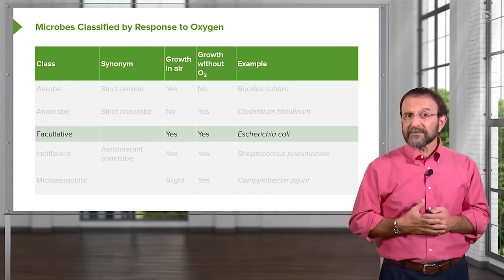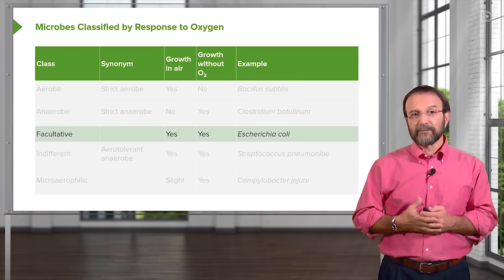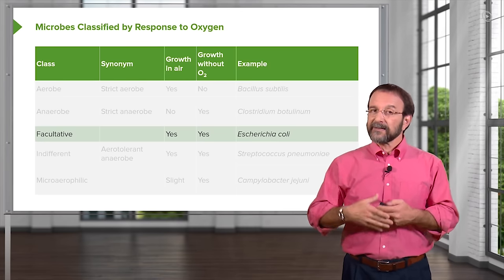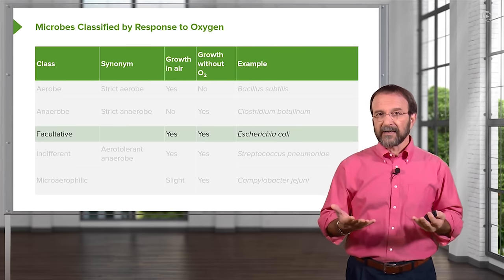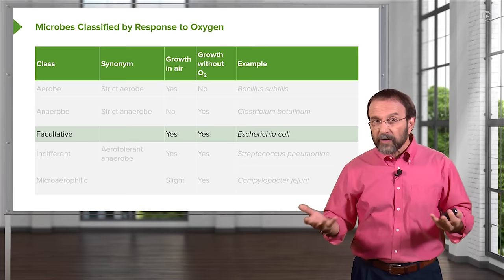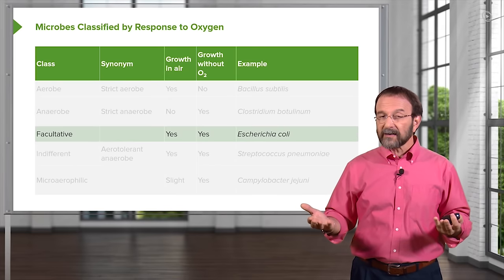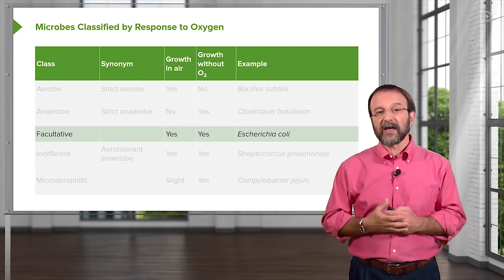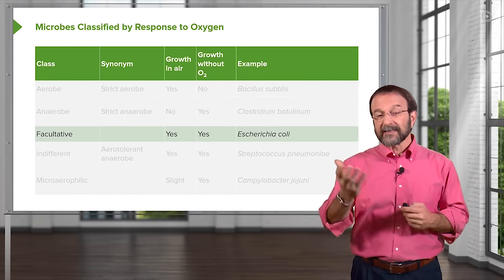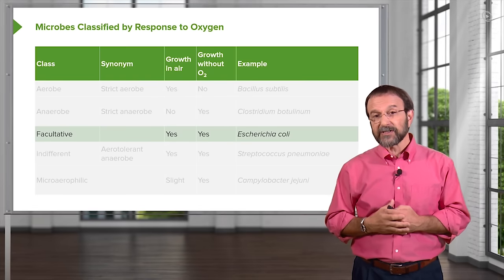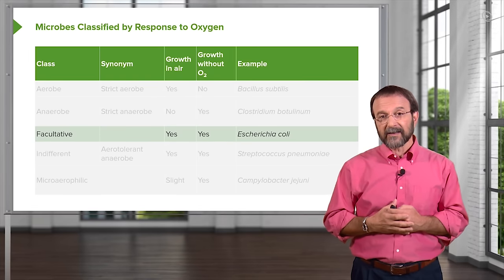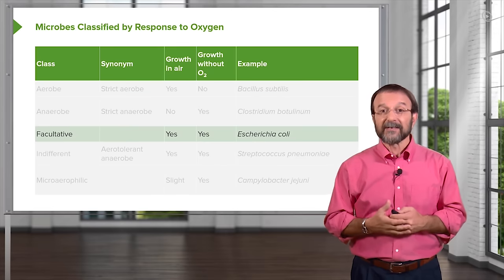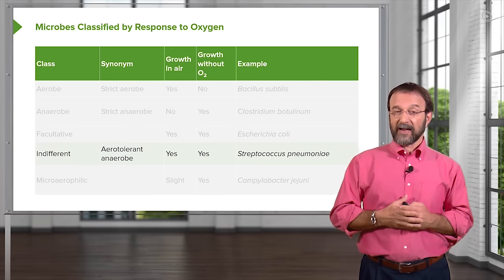We then have facultative bacteria. These bacteria can grow in air or they can grow without oxygen — they can go either way, which is why we call them facultative. An example is Escherichia coli, that common inhabitant of our intestinal tracts.